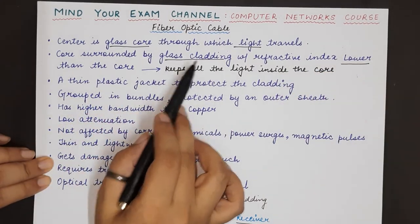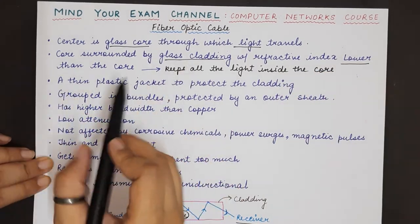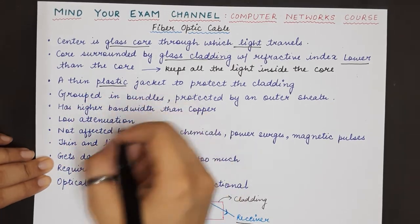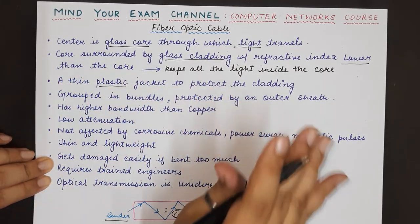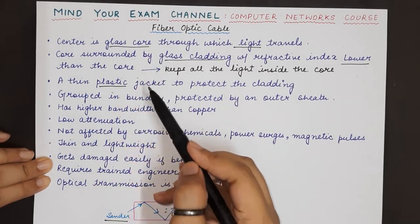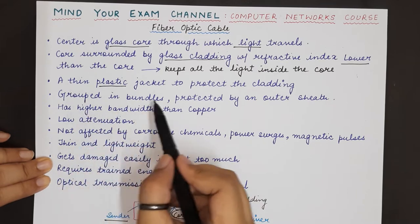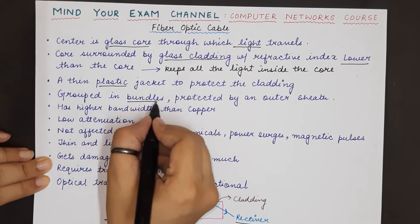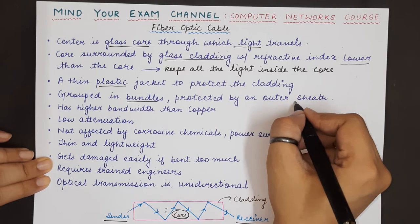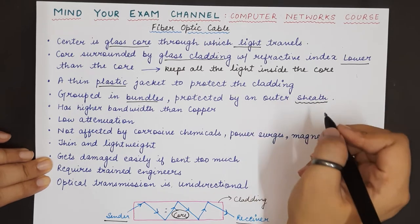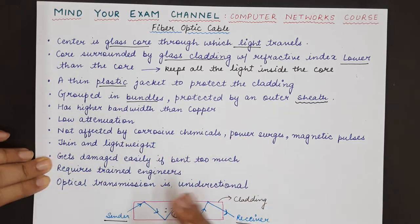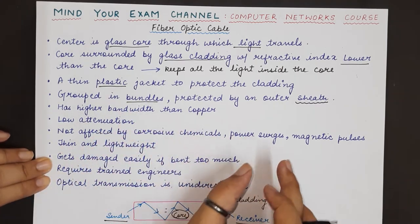The cladding is itself covered by a thin plastic jacket to protect it from any kind of physical damage. Multiple fiber optic cables are grouped together in bundles, and each group is protected by an outer sheath, which is a protective covering provided to the group of fiber optic cables.